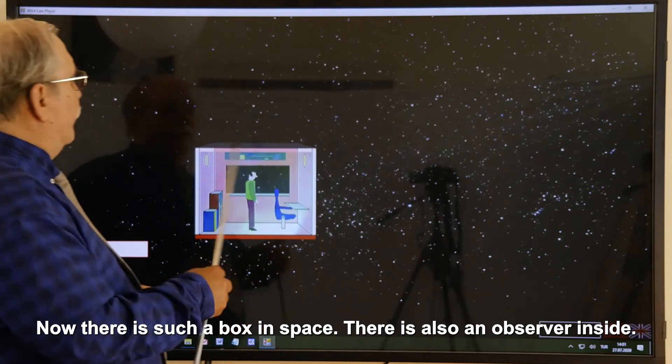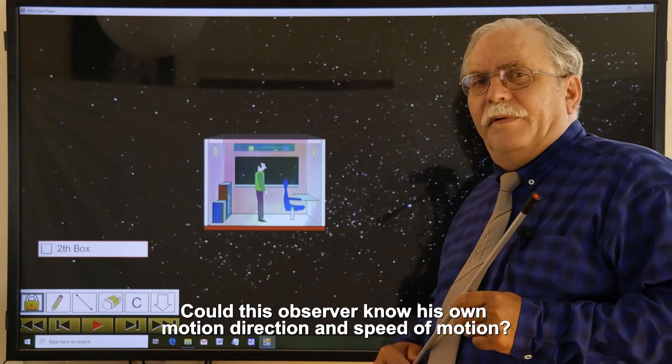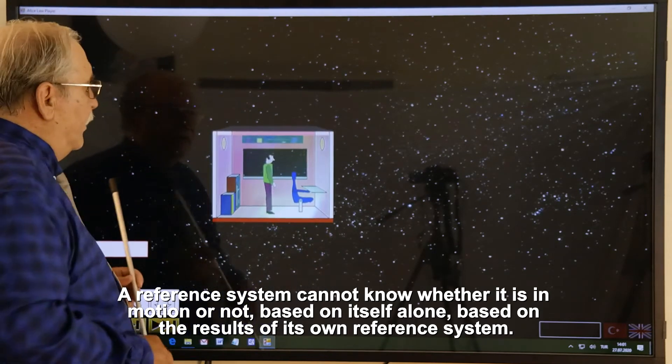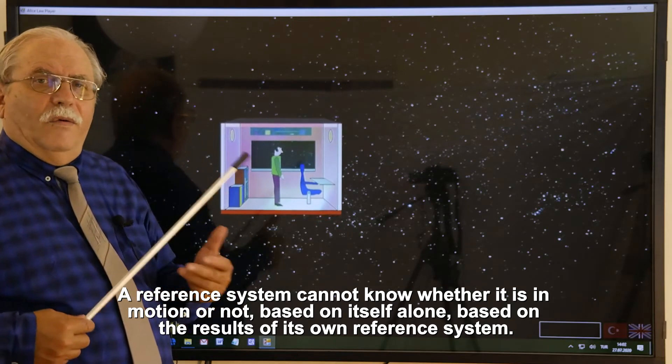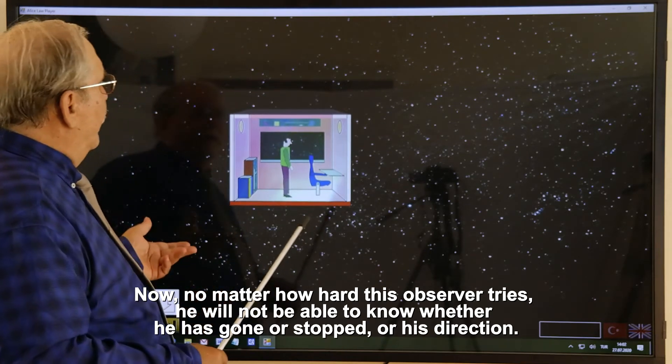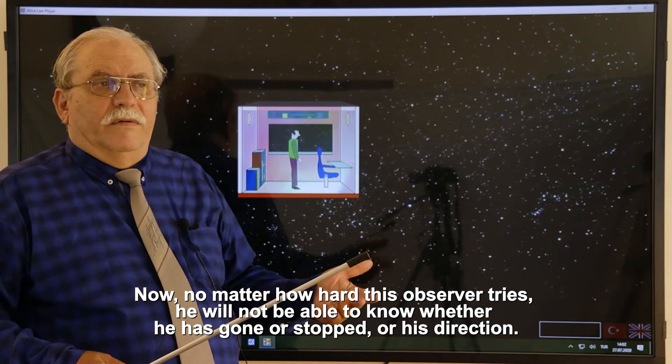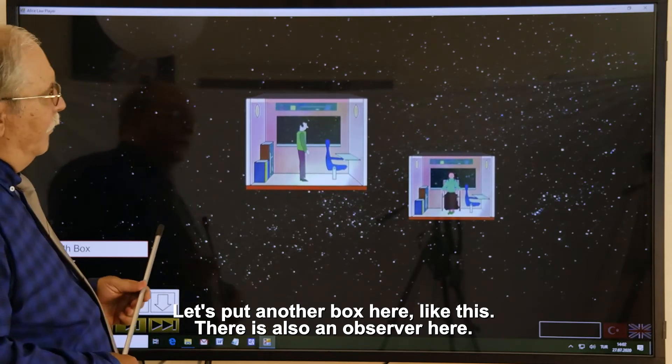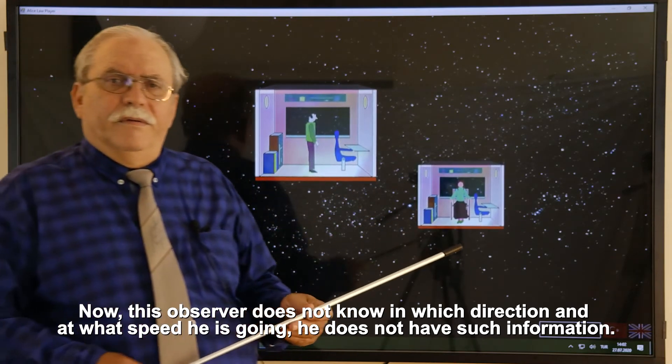Now there is such a box in space. There is also an observer inside. Could this observer know his own motion direction and speed of motion? Galileo relativity principle says a reference system cannot know whether it is in motion or not, based on itself alone, based on the results of its own reference system. Of course, we are talking about reference systems moving at a constant speed. Now, no matter how hard this observer tries, he will not be able to know whether he has gone or stopped, or his direction.